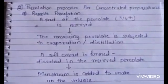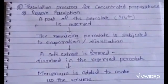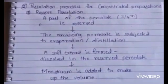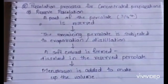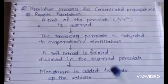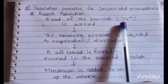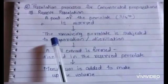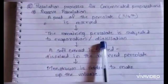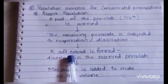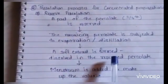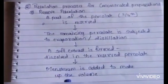The second type of percolation process is percolation for concentrated preparations. It is used for preparing concentrated liquid and solid extracts and is divided into two parts: reserved percolation and modified percolation. In reserved percolation, three-fourths of the percolate is reserved, and the remaining one-fourth is subjected to evaporation or distillation to form a soft extract. This soft extract is then dissolved in the previously reserved percolate, and menstruum is added to make up the volume.